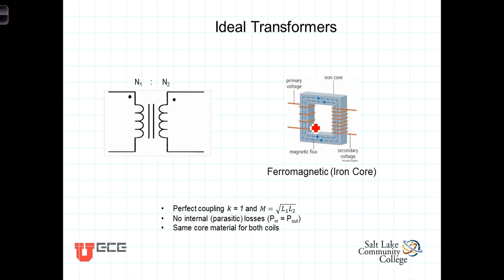The second approximation is that there are no parasitic losses. There are no heat losses due to the magnetic current flowing through the core material. In other words, there's no losses and the power in into the primary side of the transformer will equal the power out of the secondary side.